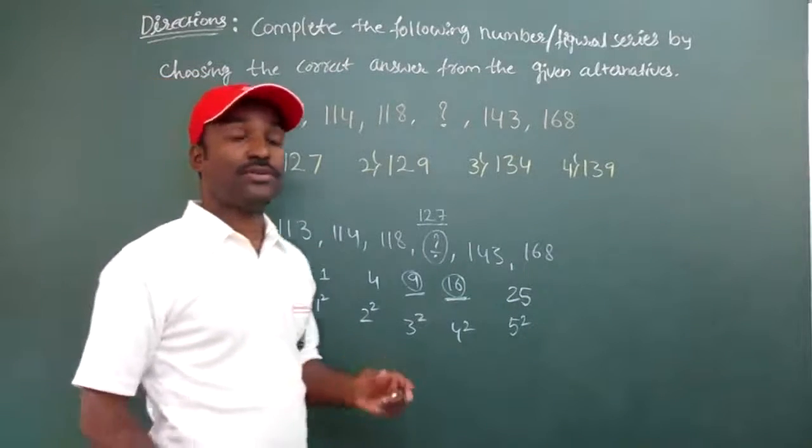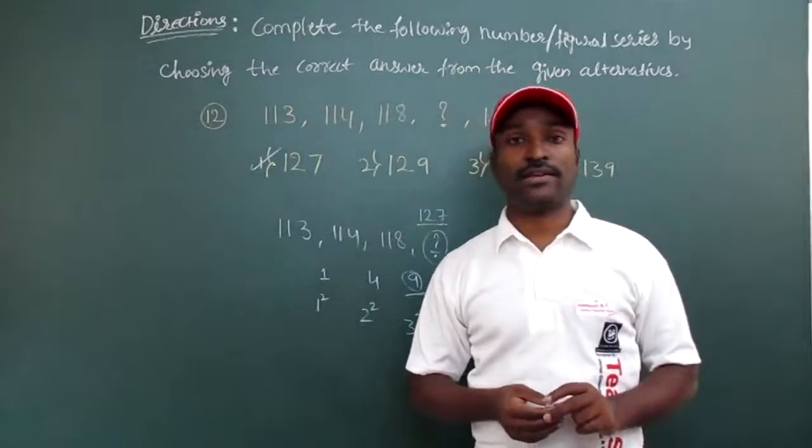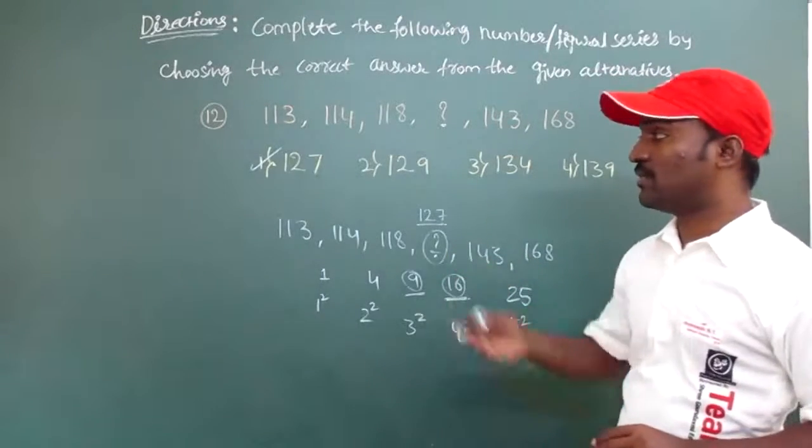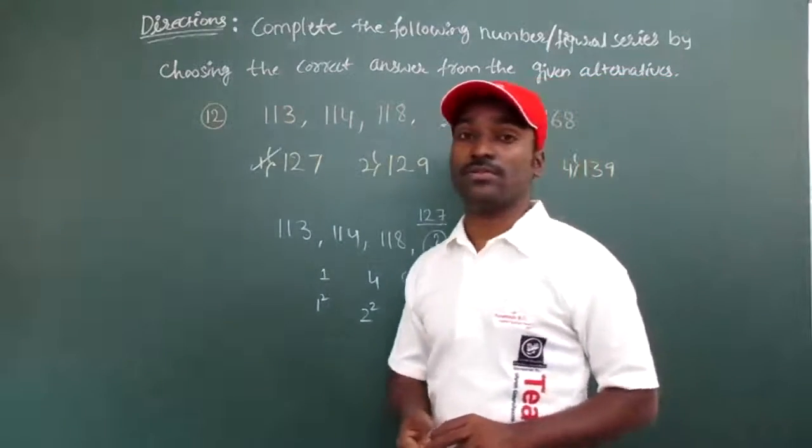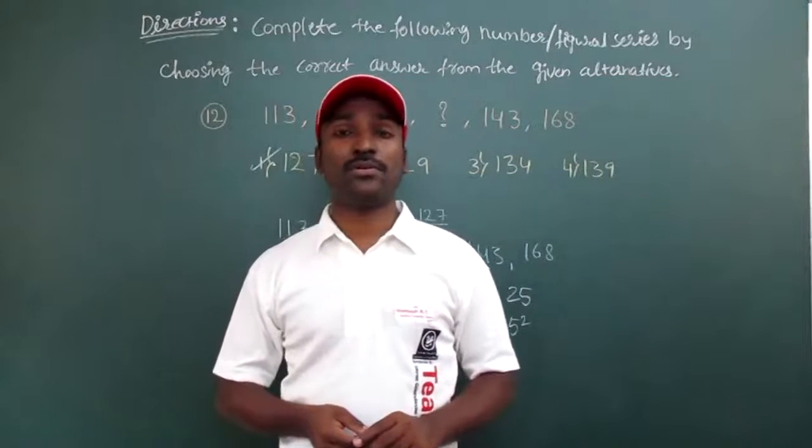So this is how we solve this example by considering the given series and using trial and error technique. And finally got the answer as 127. The first option is having 127, so that's the right option. Okay friends, now I will move to next.